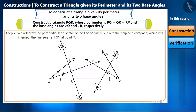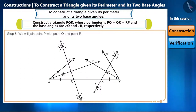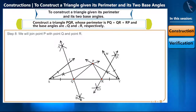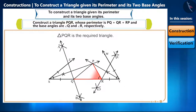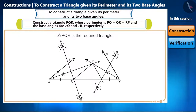Step 7: similarly, we will draw the perpendicular bisector of line segment YP with the help of a compass, which will intersect line segment XY at point R. Step 8: we will join point P with point Q and point R, and thus we have constructed triangle PQR when we had information about its perimeter and the base angles.